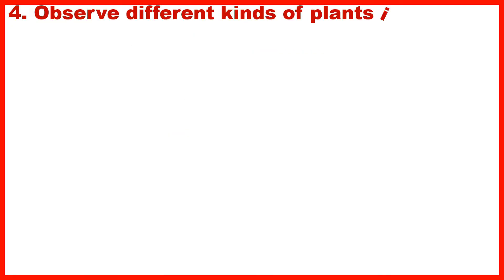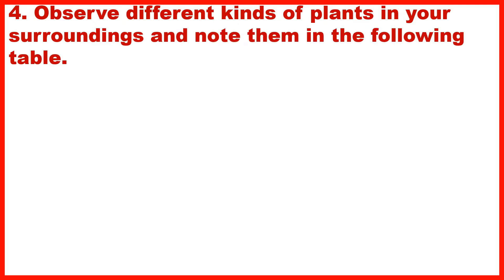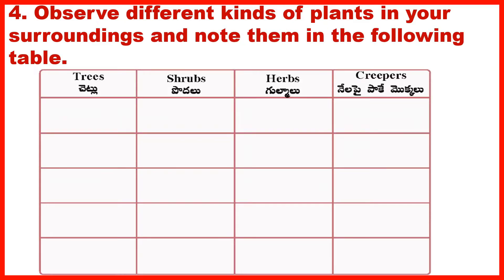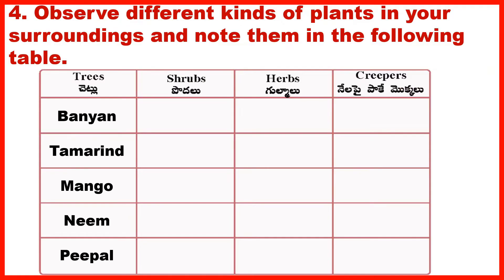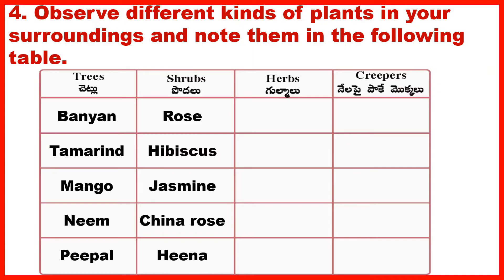Section 4: Observe different kinds of plants in your surroundings and note them in the following table. Answer – Trees: Banyan, Tamarind, Mango, Neem, Peepal. Shrubs: Rose, Hibiscus, Jasmine, China Rose, Heena.